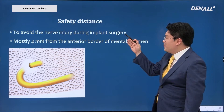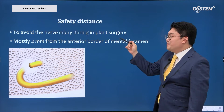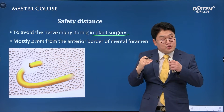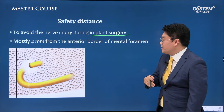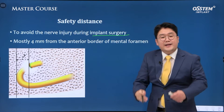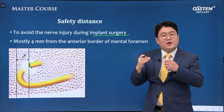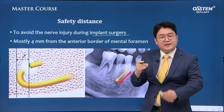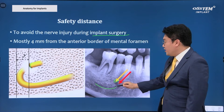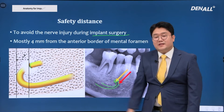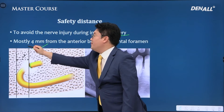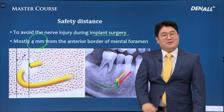In the premolar area or anterior to the premolar area, when you place an implant, it is important that we do not invade the anterior loop. As shown here, from the anterior border of the mental foramen, if you set a safety distance, you will be able to place it safely. On x-ray you can see the inferior alveolar nerve, mental foramen, and loop. In general, the safety distance is 4mm.